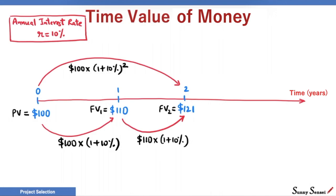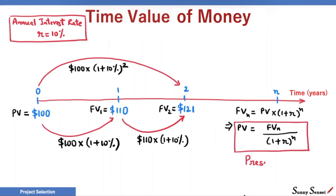In general, after N years, we can find the future value. Here, R is the interest rate. Rearranging the terms, we have this equation.